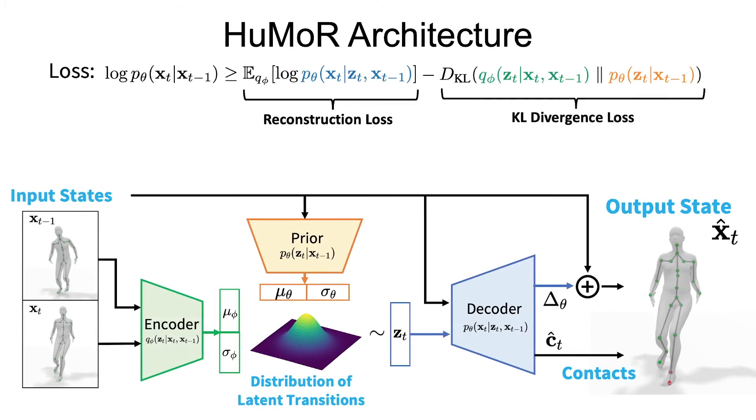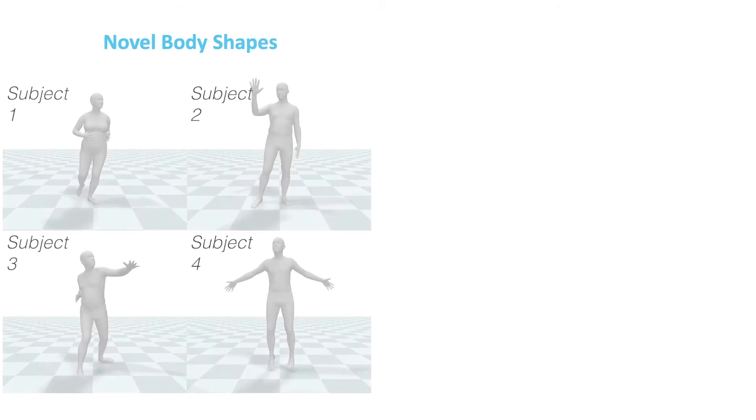At training time, an encoder is introduced and the loss is based on the typical conditional VAE lower bound. This contains both a reconstruction and KL divergence term. Humor is trained on pairs of frames from AMASS, a large set of motion capture data, which enables it to learn a wide range of motions and body shapes.